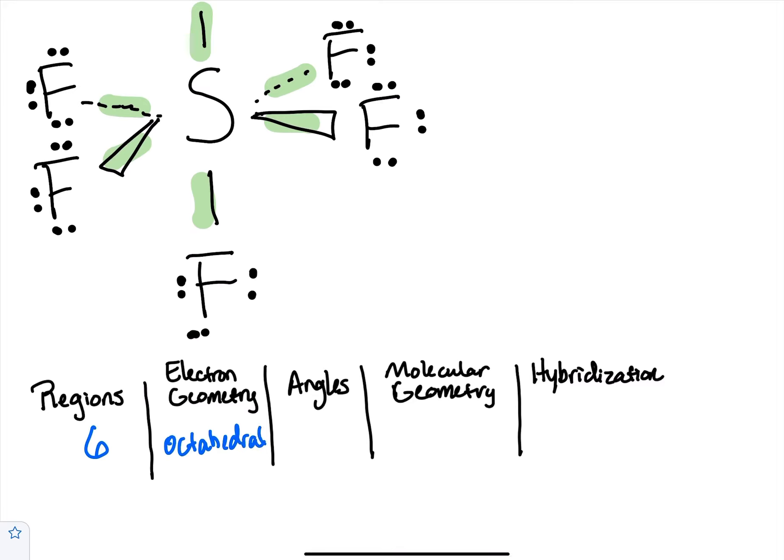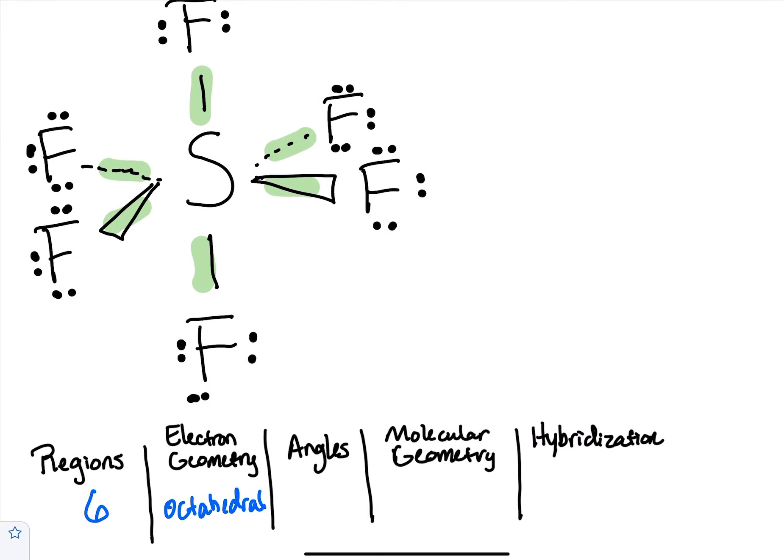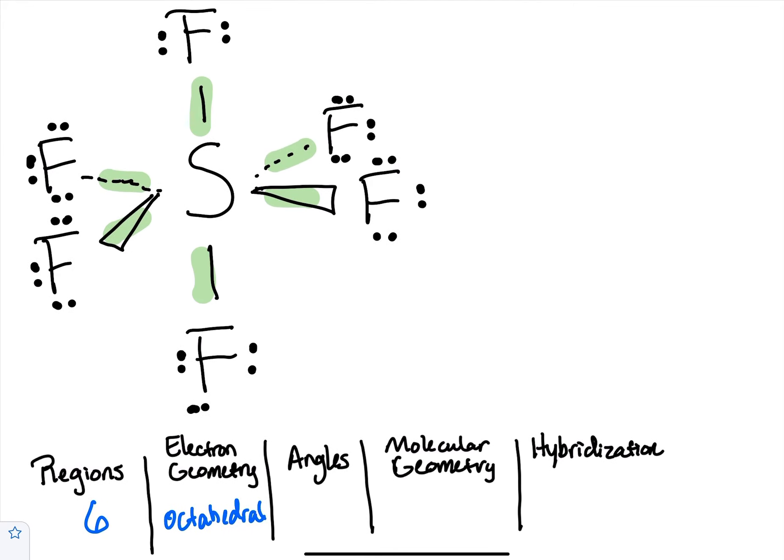There is some significance by the way to the octahedral and the tetrahedral in upper level chemistry. Those two particular shapes are what the heavy metals bond with and they form these complexes that are very important, and so those will come back. They kind of have their own little subcategory of importance in one area of chemistry.